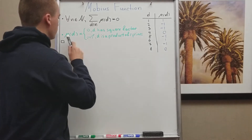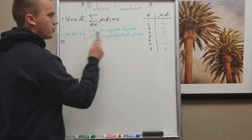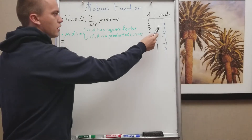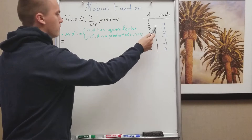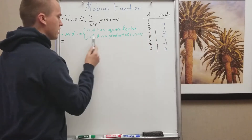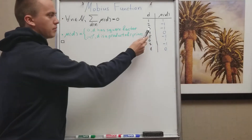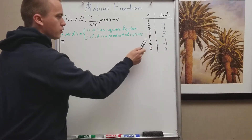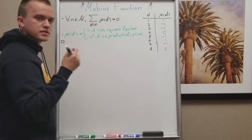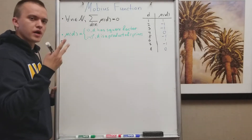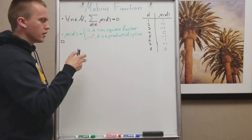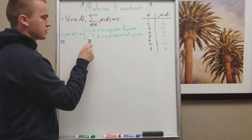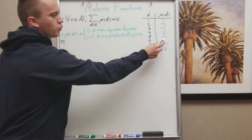For example, μ(3) = -1 because 3 has only one prime factor. And for 6, which is a product of two primes 2 and 3, the Möbius function equals (-1)² = 1.